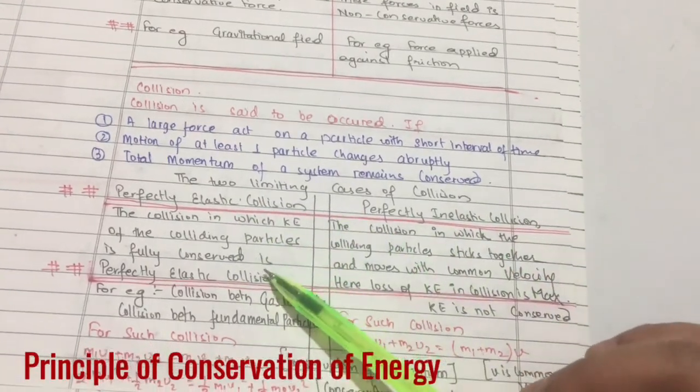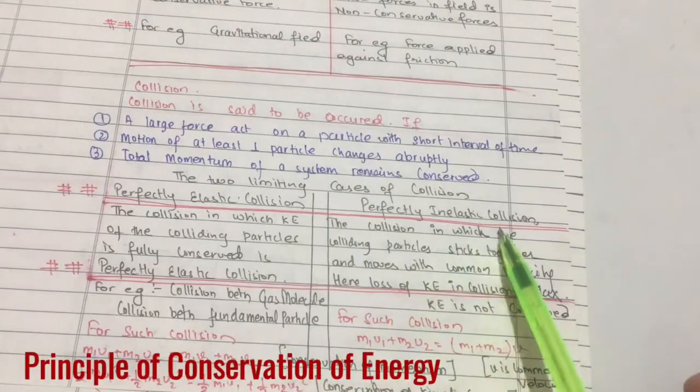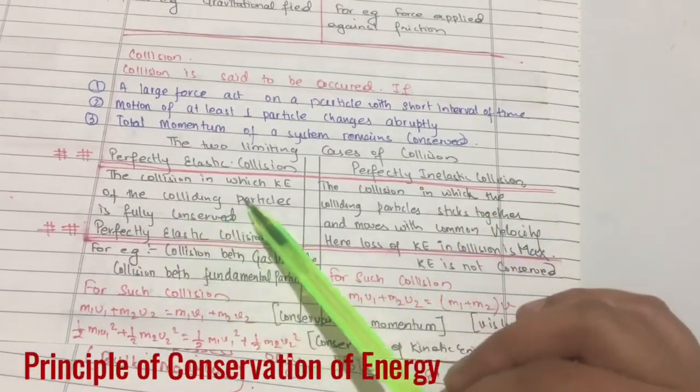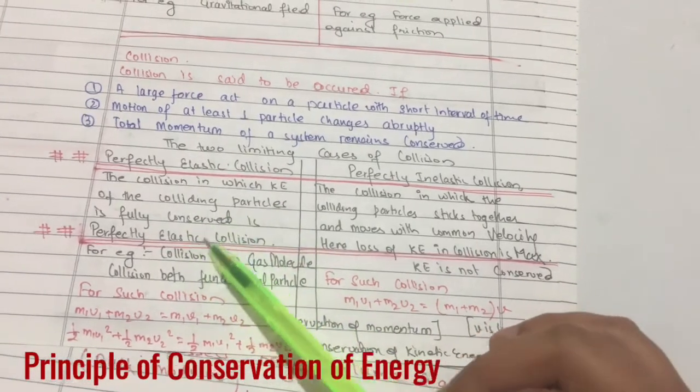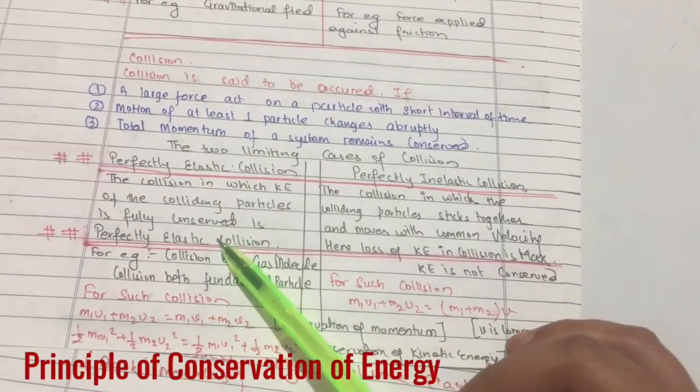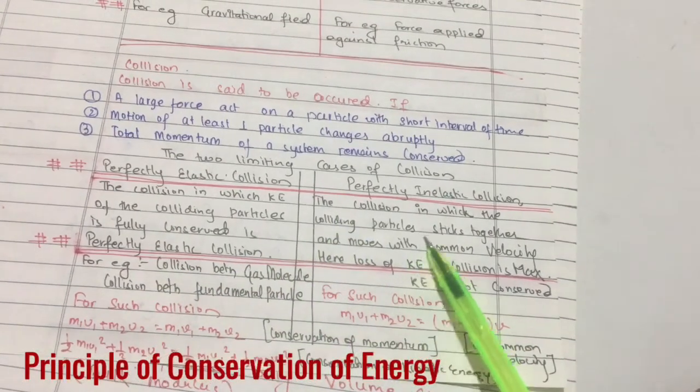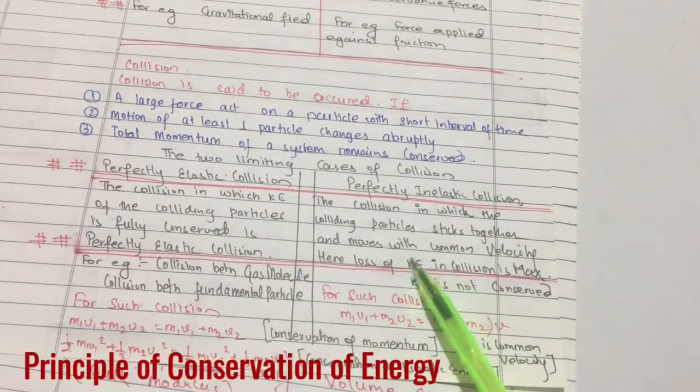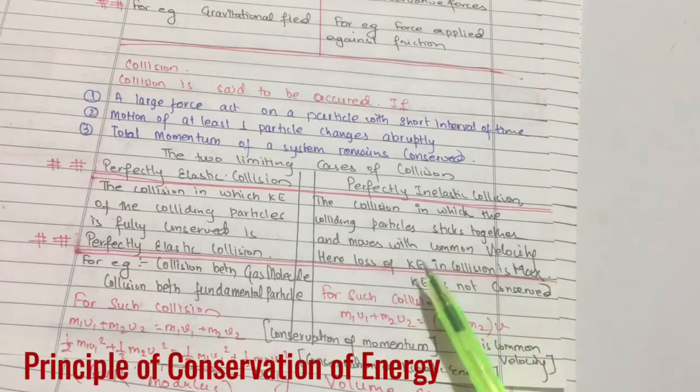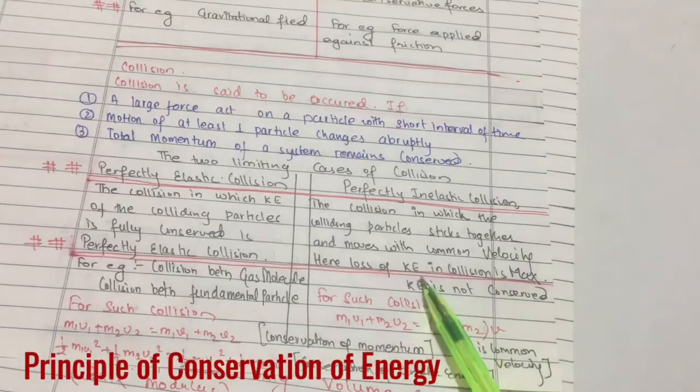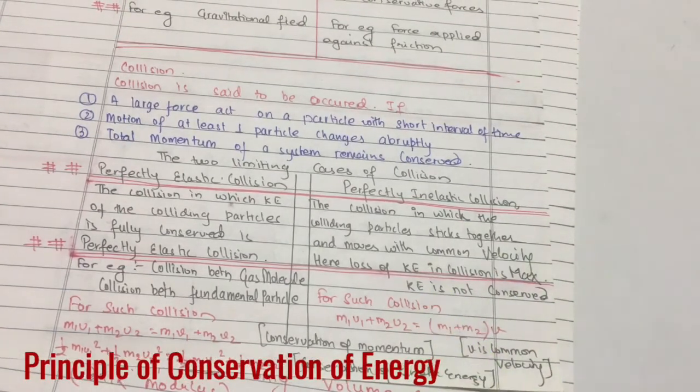What is perfectly elastic collision? The collision in which kinetic energy of the colliding particles is fully conserved. In perfectly inelastic collision, the colliding particles strike together and move with a common velocity. Here the loss of kinetic energy in the collision is maximum.